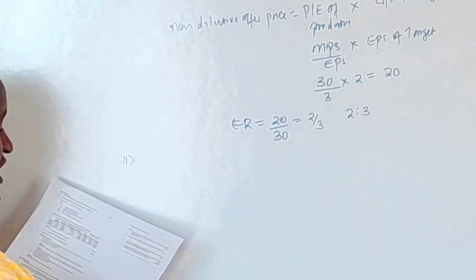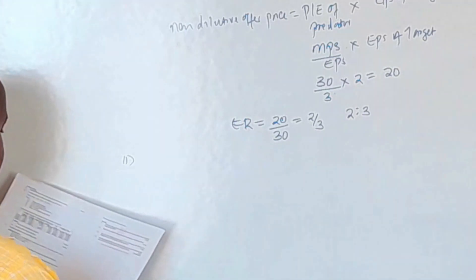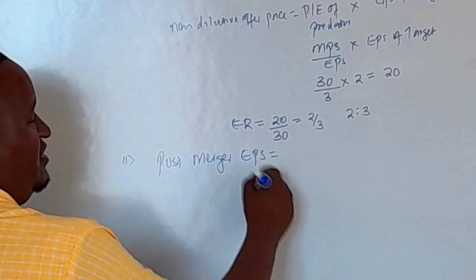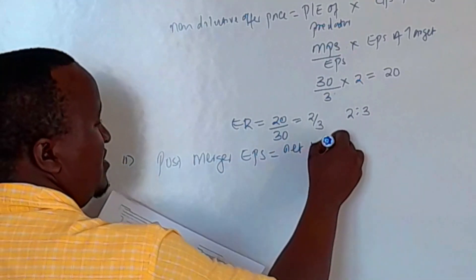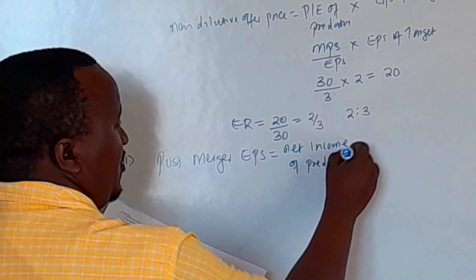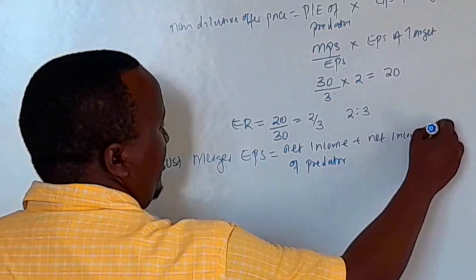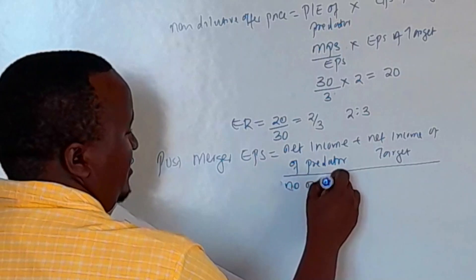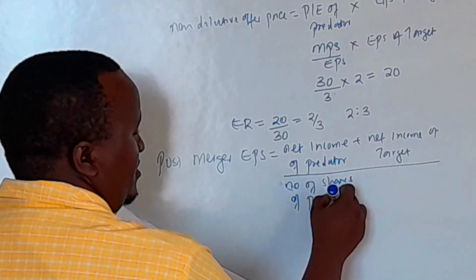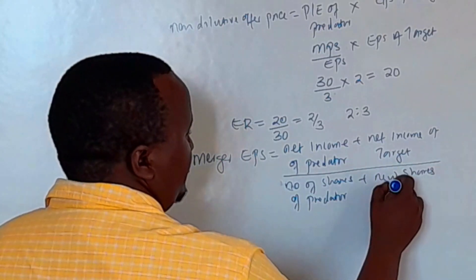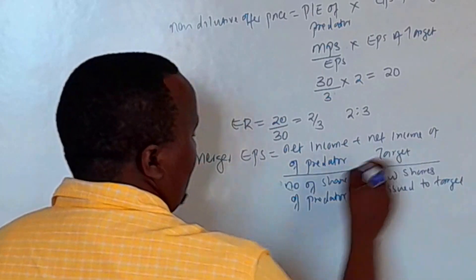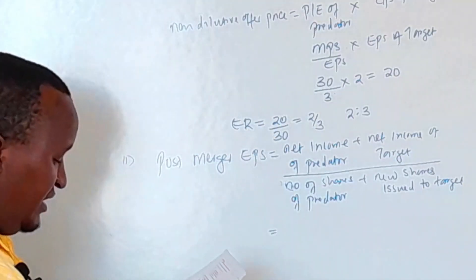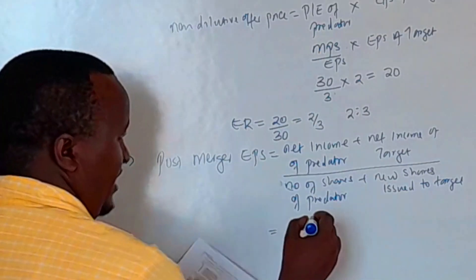Part two: Alpha Limited's post-acquisition earnings per share if the company agrees on an offer price of 40. The post-merger EPS formula is: net income of predator plus net income of target, divided by shares of predator plus new shares issued to target. The predator is Alpha, with net income of 150, and Beta's net income is 20.